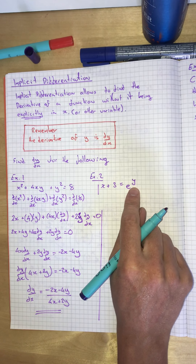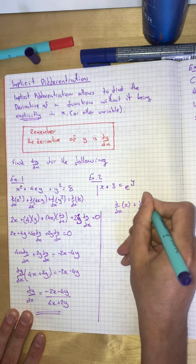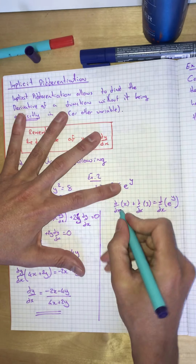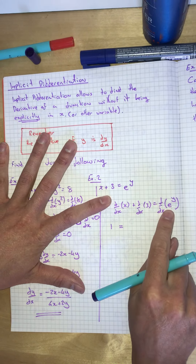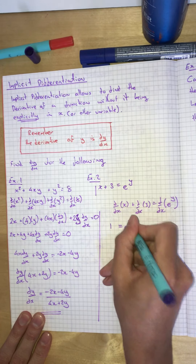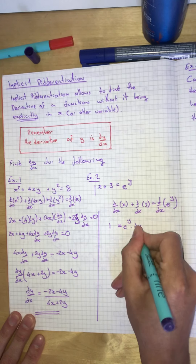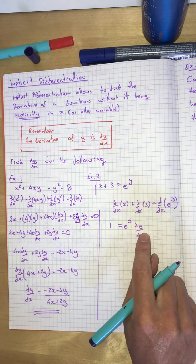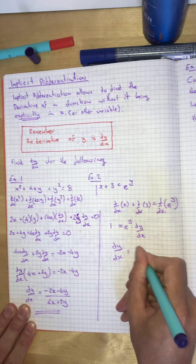Differentiate the following. Set it up to differentiate: d/dx of x plus d/dx of 3 equals d/dx of e to the power y. Differentiate x and you get 1. Differentiate 3, you get 0. So it's just 1 equals the derivative of e to the y. When you differentiate e to the x or e to anything, it stays the same, but then we multiply by the derivative of the internal function, which is y, and we know the derivative of y is dy/dx. I want it to be dy/dx equals something, so we just divide through by e to the power y.